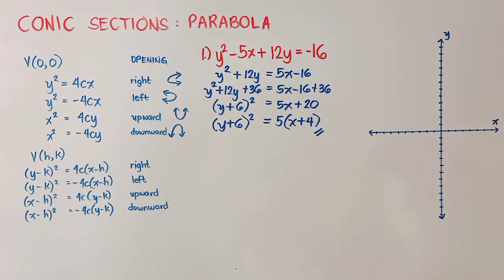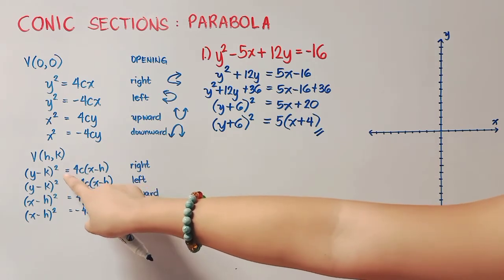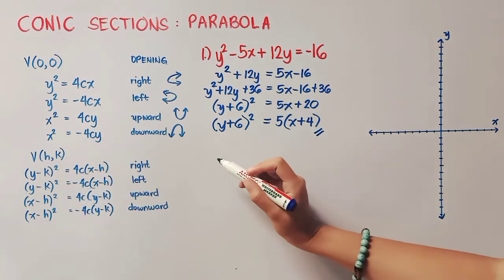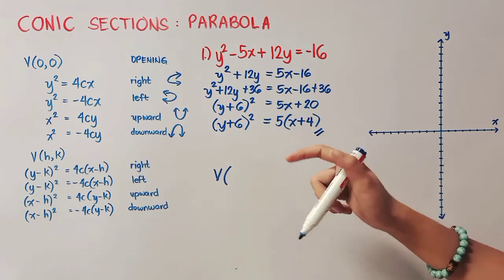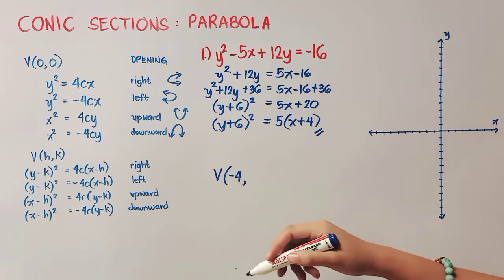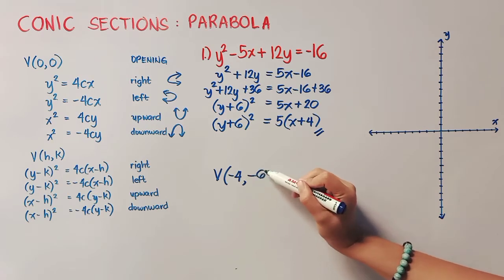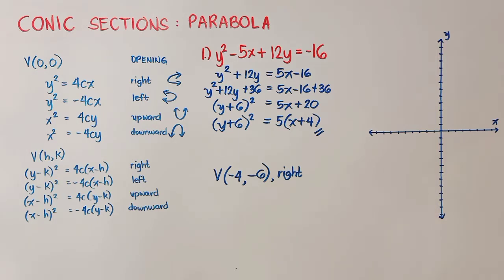Since we already have the standard form, we will just look at the choices here. As you can see, it is very similar to this form here. So that means to say, our vertex is hk, where our h is, that's plus 4, but in the form it's minus 4. So we make it negative 4 because negative times negative is positive. Same with k, that will become negative 6 and our parabola opens to the right. So we will plot first our vertex here. Negative 4 and then negative 6. So it is in this point here. Let's label v.